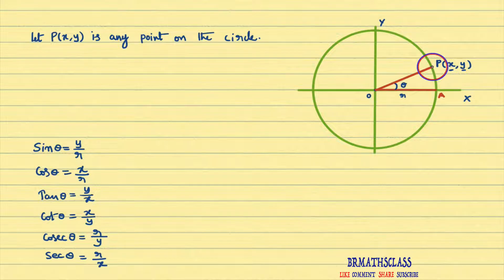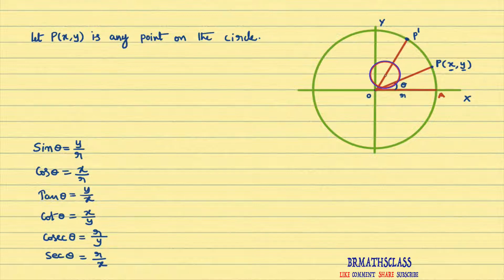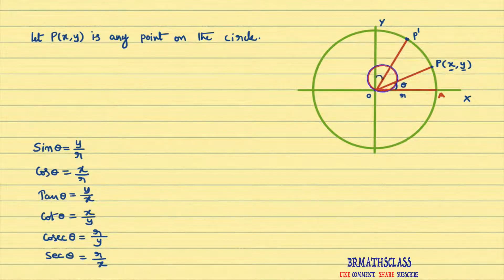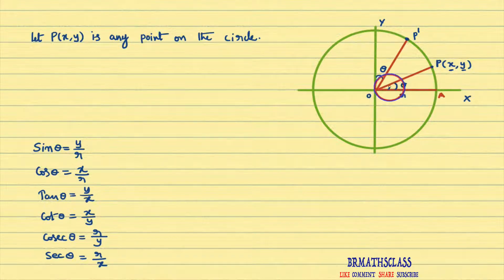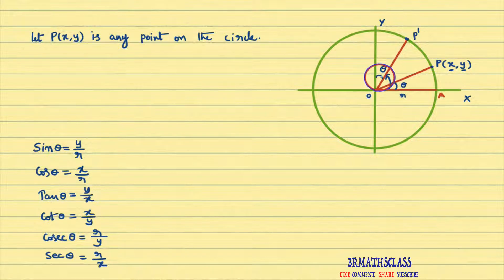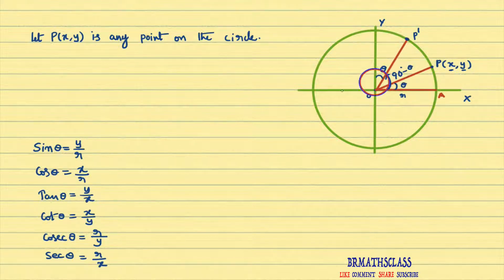Now observe ray OP'. I am saying that OP' makes an angle of 90° - θ with the x-axis. Please try to understand: if this angle is θ, and the full angle is 90°, then the angle made by OP' with the x-axis is 90° - θ.